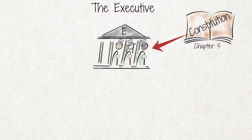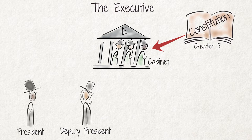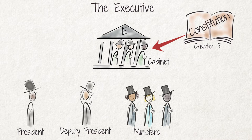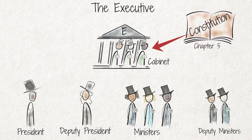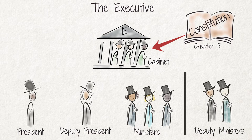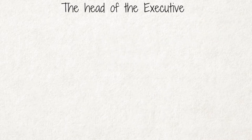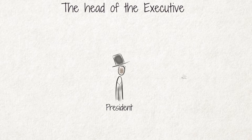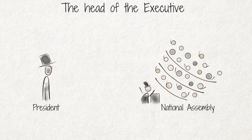The national executive is made up of the cabinet, which includes the president, the deputy president, and the ministers of each government department. Deputy ministers are not part of the cabinet, but they are also part of the executive. The head of the executive is the president, who is elected by the National Assembly from among its members for a fixed term.